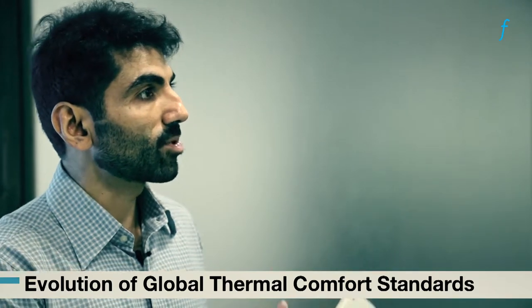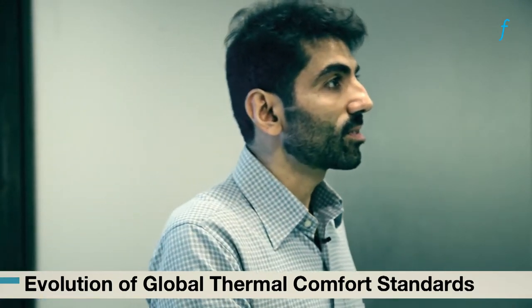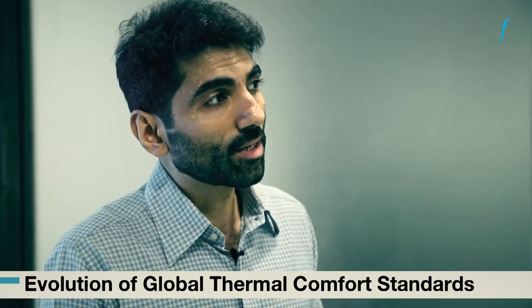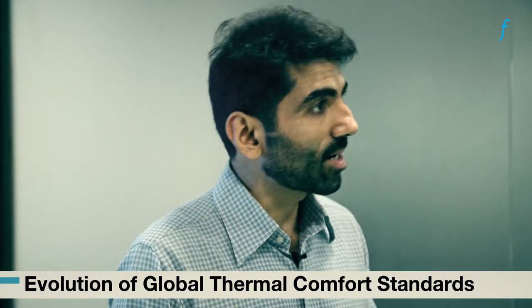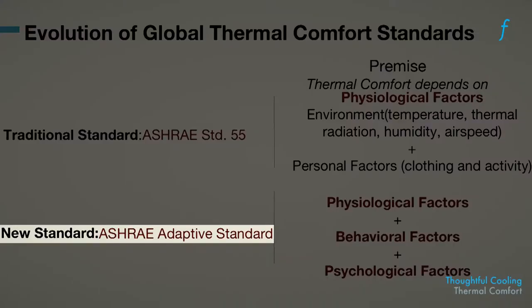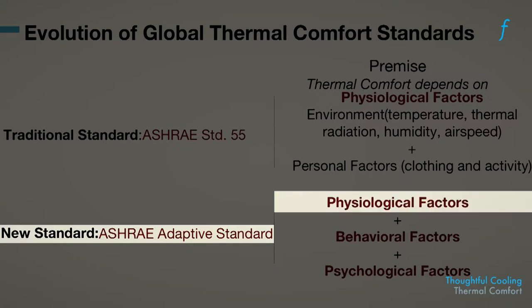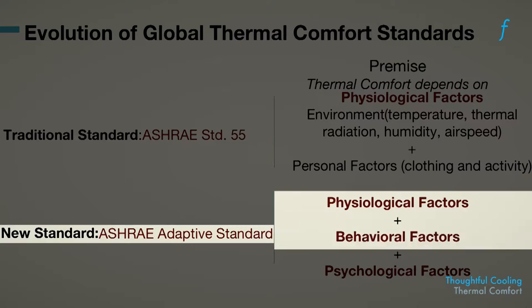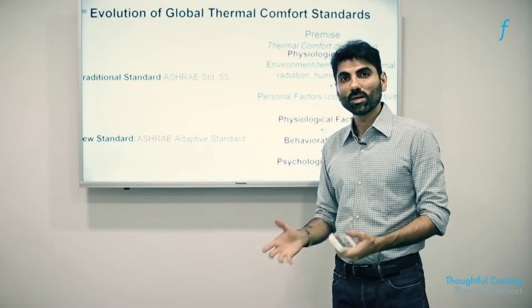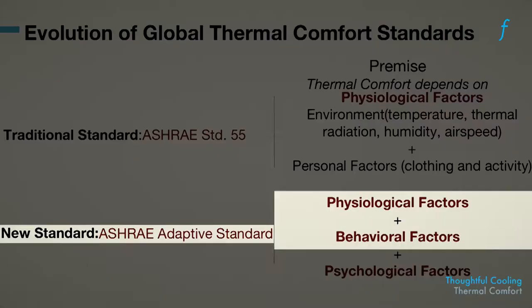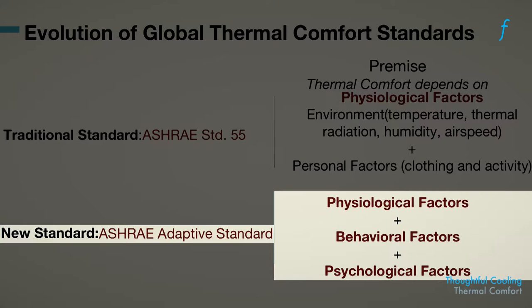The adaptive standard includes the idea that human beings have an autonomous adaptive capability—in certain temperature or weather conditions, they have more resilience to withstand higher temperatures and humidities, and at other times more resilience against cold and dry conditions. This standard incorporates physiological factors, behavioral factors related to habits, and psychological factors which have not previously been part of thermal comfort standards.